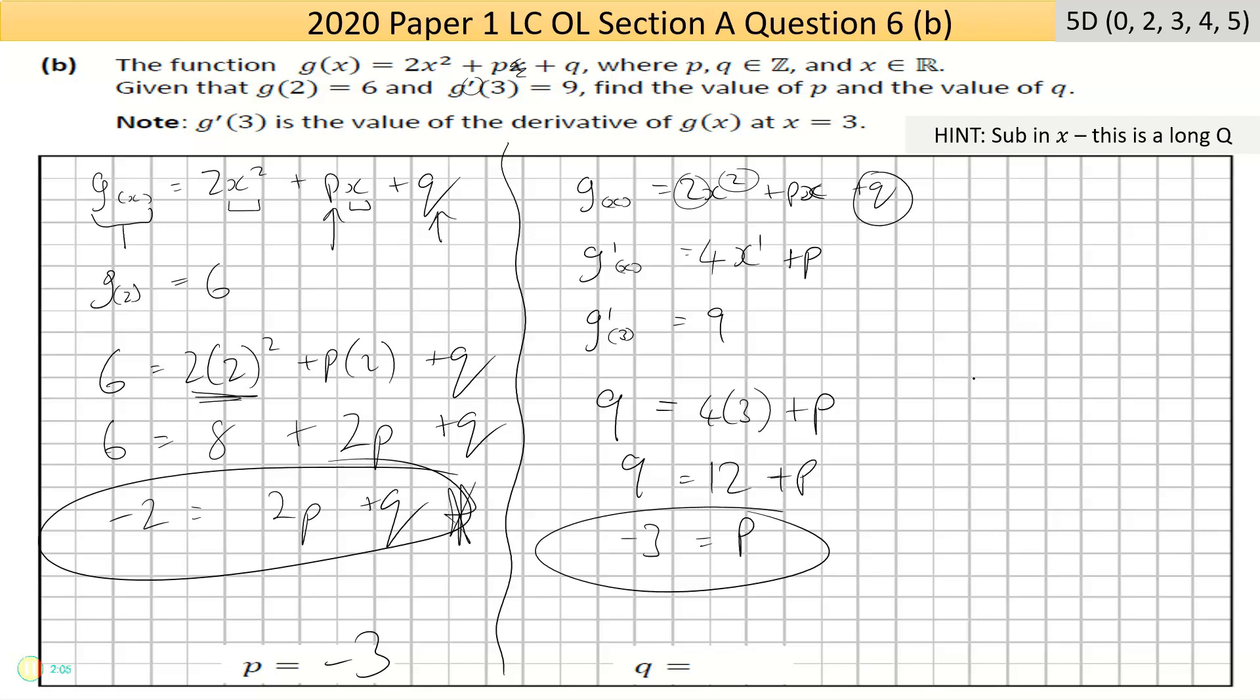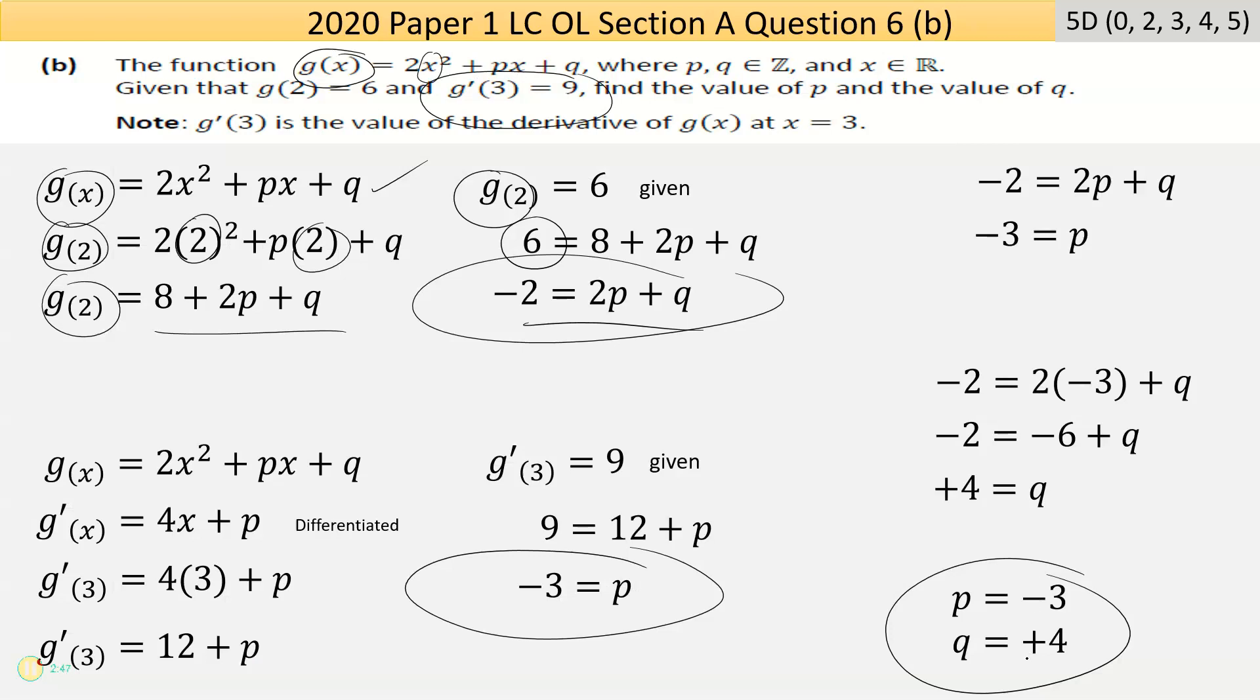How do you find q? Go back to one of the equations that mentions it. I'm going to use this one: -2 = 2p + q. Now I know what p is. That equals 2 × -3 + q. If I go left to right and resolve that: 2 × -3 is -6 + q. Bring the -6 across, becomes +6: -2 + 6 = q, that's +4 = q.